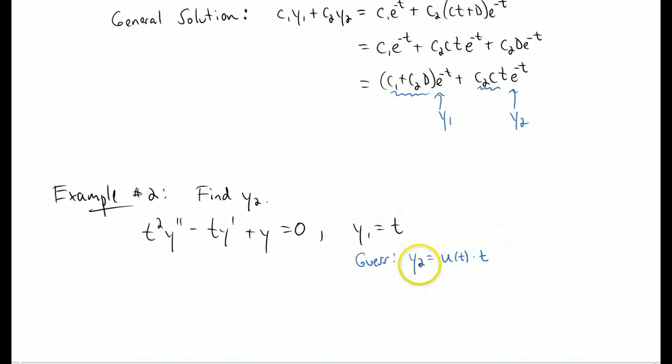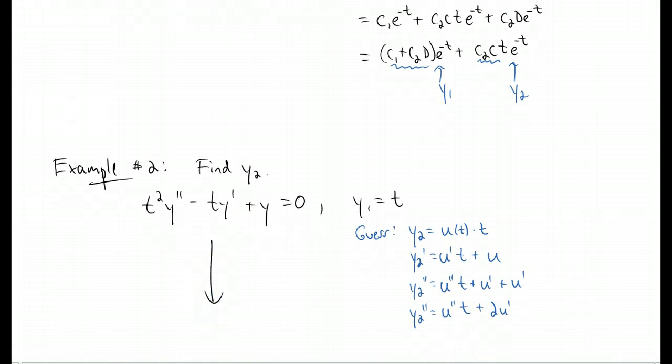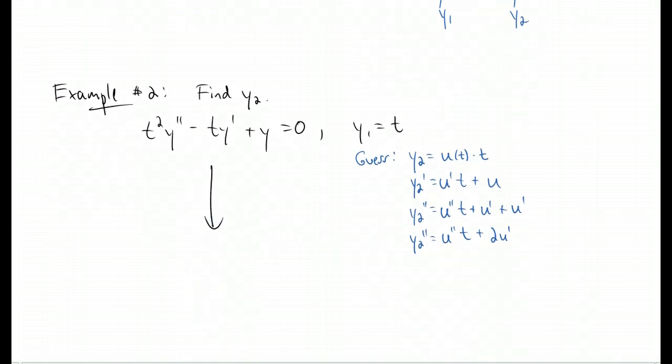Again, we're going to make a guess that our second solution is some function times y1. I'm going to take derivatives, plug those derivatives into the differential equation. Again, these are implicit derivatives. We use the product rule to get those. Now let's plug them into the DE.